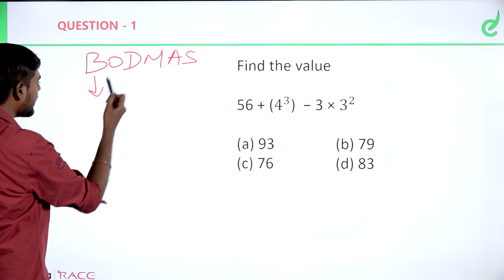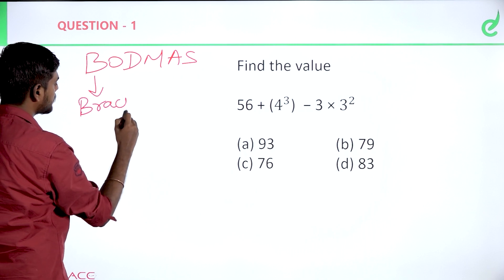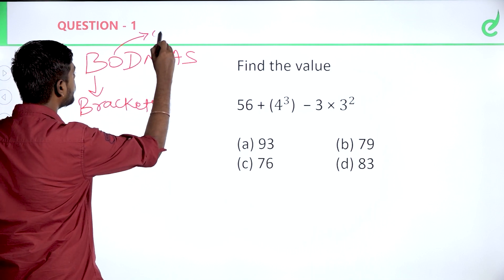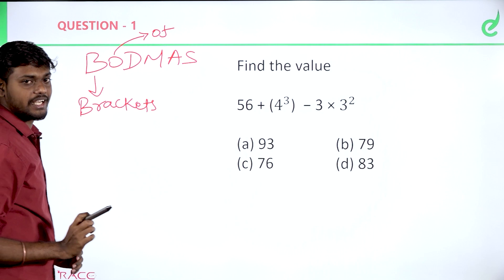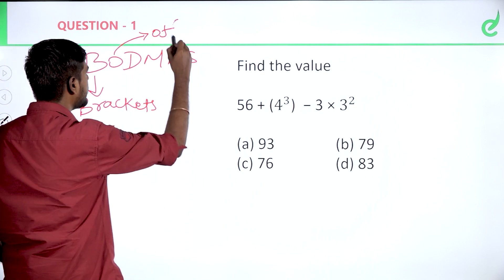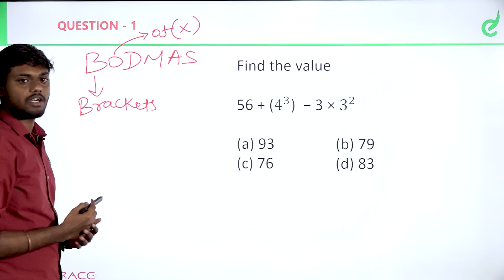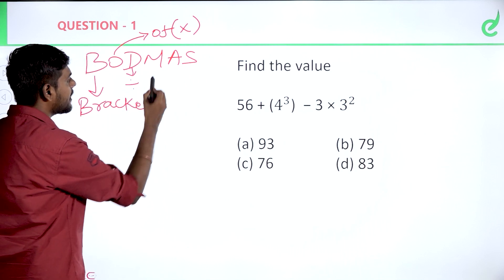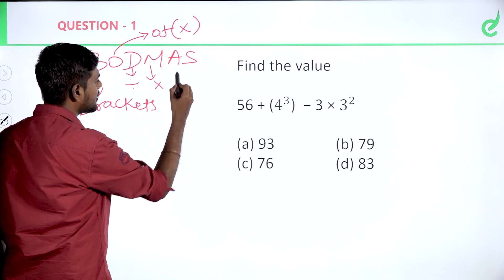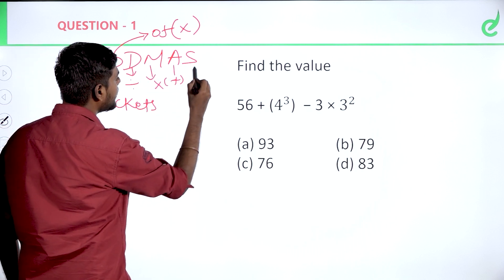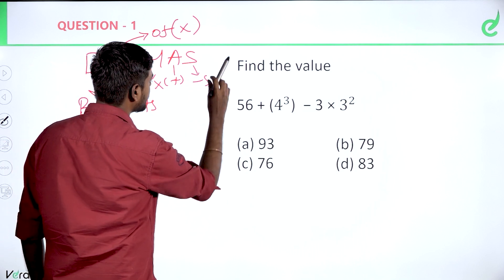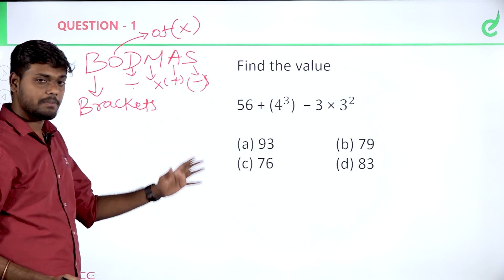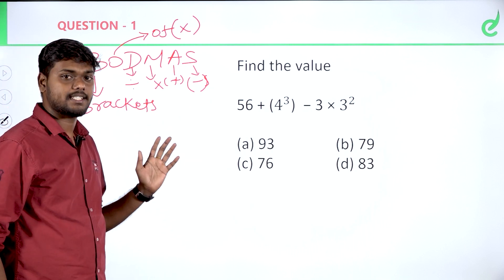BODMAS is actually an abbreviation. B is Brackets. O is Of — Off is nothing but multiplication. D is Division. M is Multiplication. A is Addition. And finally, S is Subtraction. So first preference in simplification is Brackets, next Off, next Division, next Multiplication, then Addition, then Subtraction.